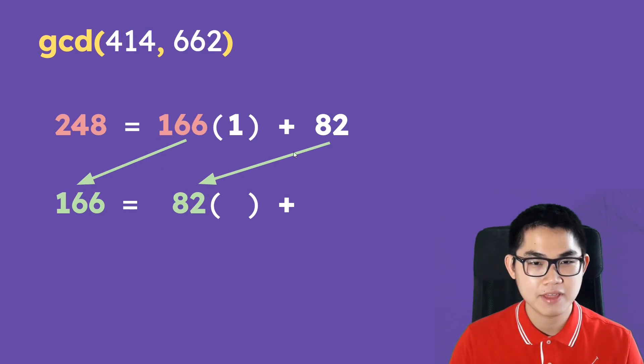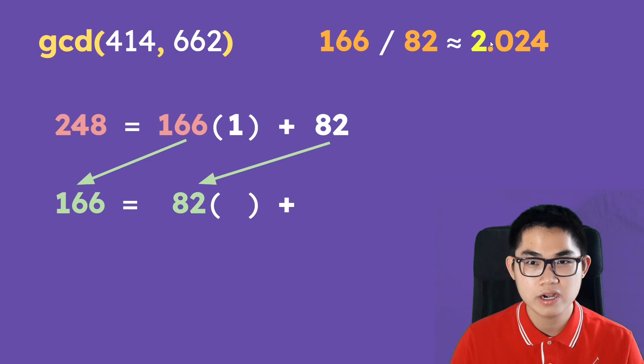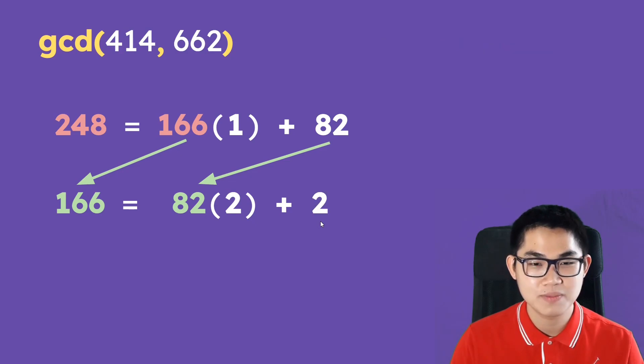So continuing on, we take 166, drop it down here, and same thing with 82. And then take 166 divided by 82, which gives you about 2.024. Take the number 2, put it into the bracket, and then find the remainder, and that's going to be 2.